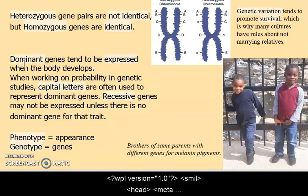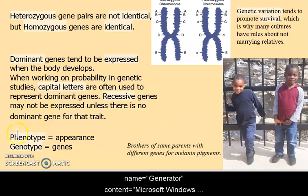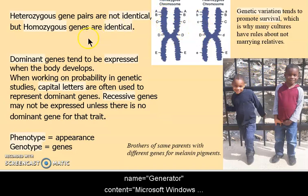Dominant means that gene is going to be expressed, and when we're doing genetics problems we use a capital letter. Recessive may not be expressed unless there's no dominant. Phenotype means how it appears; genotype refers to the genes. These brothers are genetically very different because even though they have the same chromosomes, some of the genes on those chromosomes are going to be different.